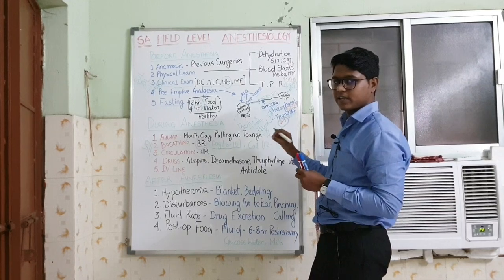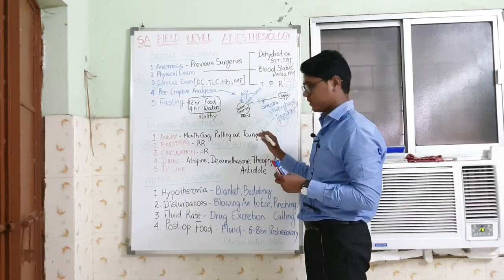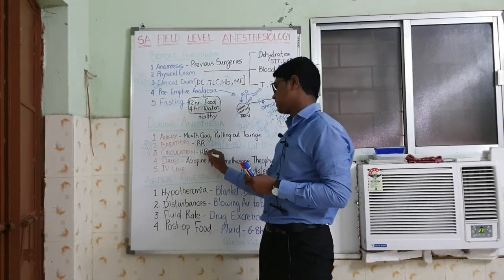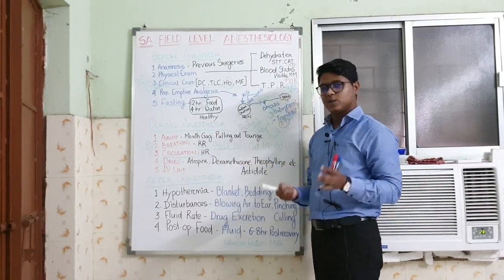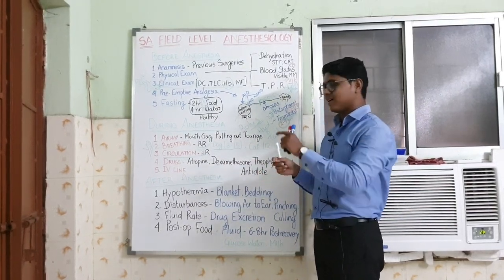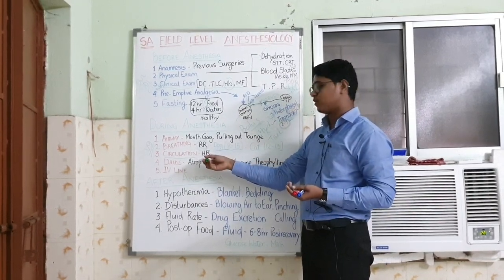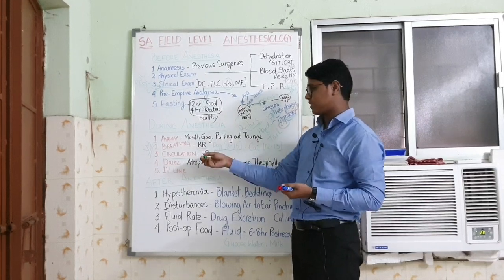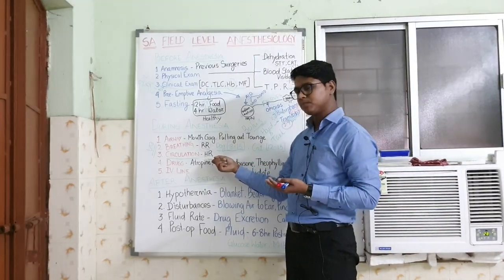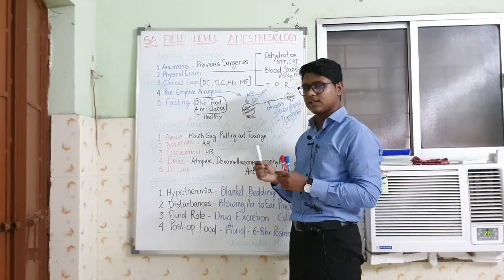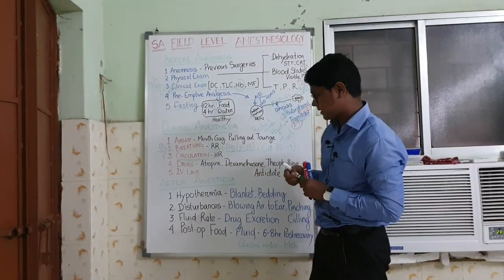C is circulation — that is heart rate. In field conditions it is very difficult to measure heart rate because you are the surgeon and the attendant may not know how to measure heart rate correctly. But you can train one attendant to measure the heart rate. That is next — D is drugs — emergency drugs.